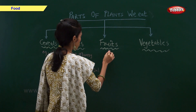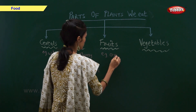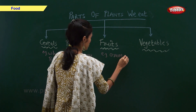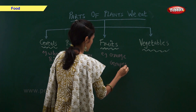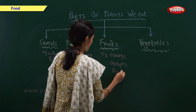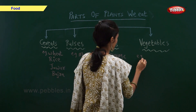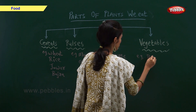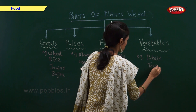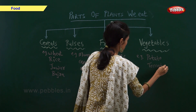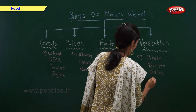Examples of fruits are orange, grapes and apple. Examples of vegetables are tomato, onion and brinjal.